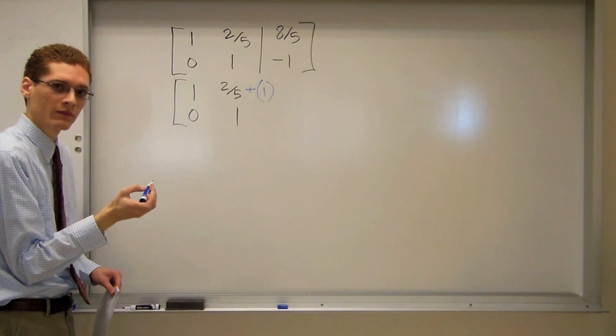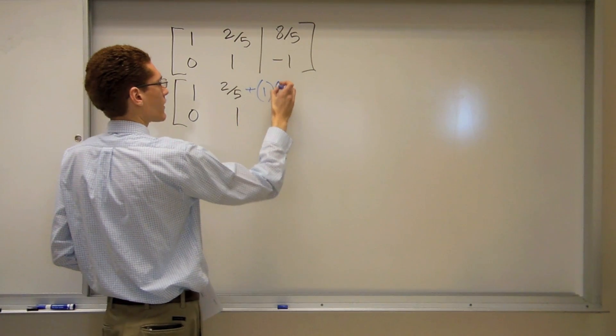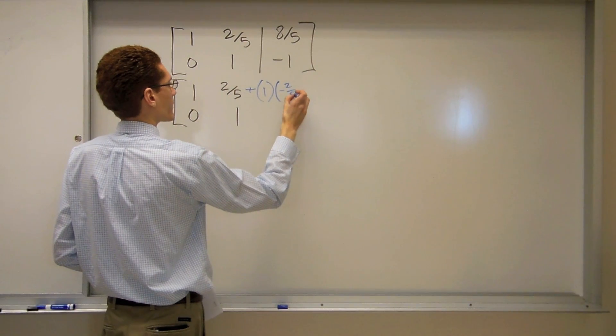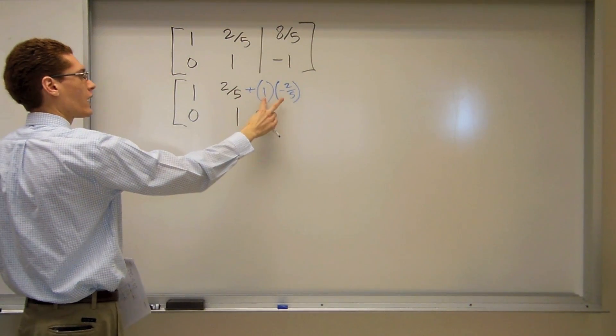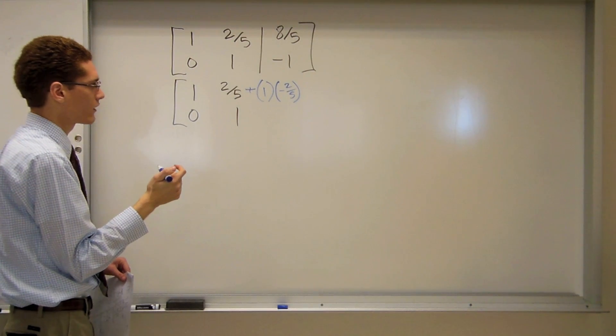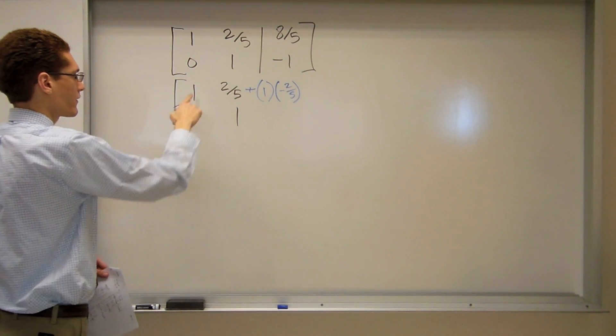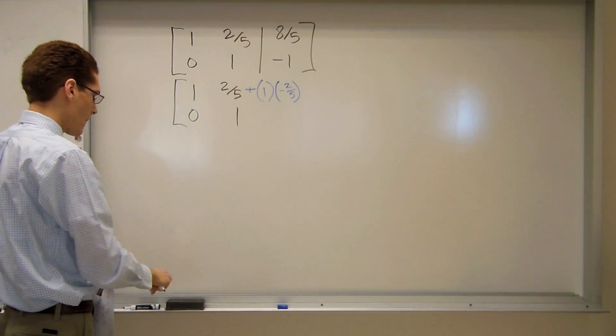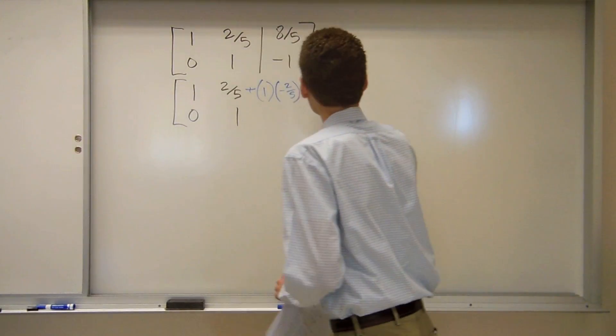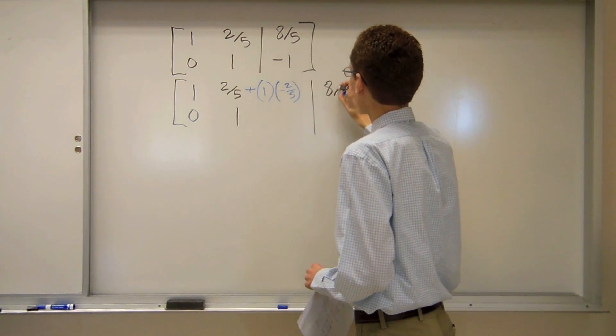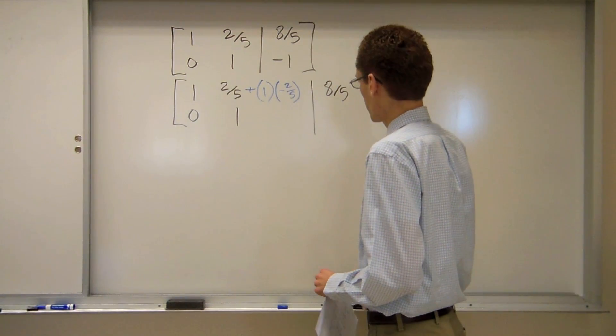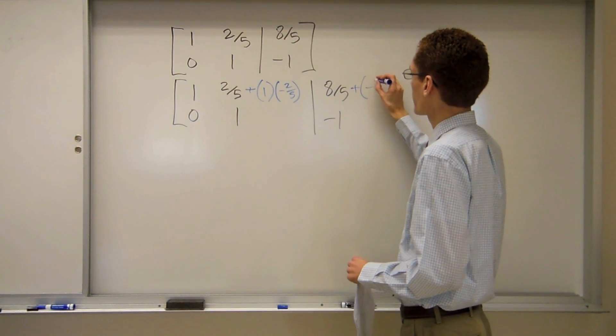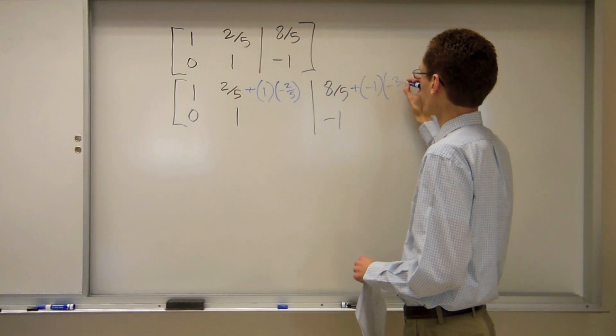So I'm allowed to add the number below times something. The number below is 1 now. So 1 times negative 2 fifths. Negative 2 fifths when added to 2 fifths is going to be 0. So that's what I'm going to use. And I have to do the same thing here except I'm just adding 0 times something, so I don't even need to write it.